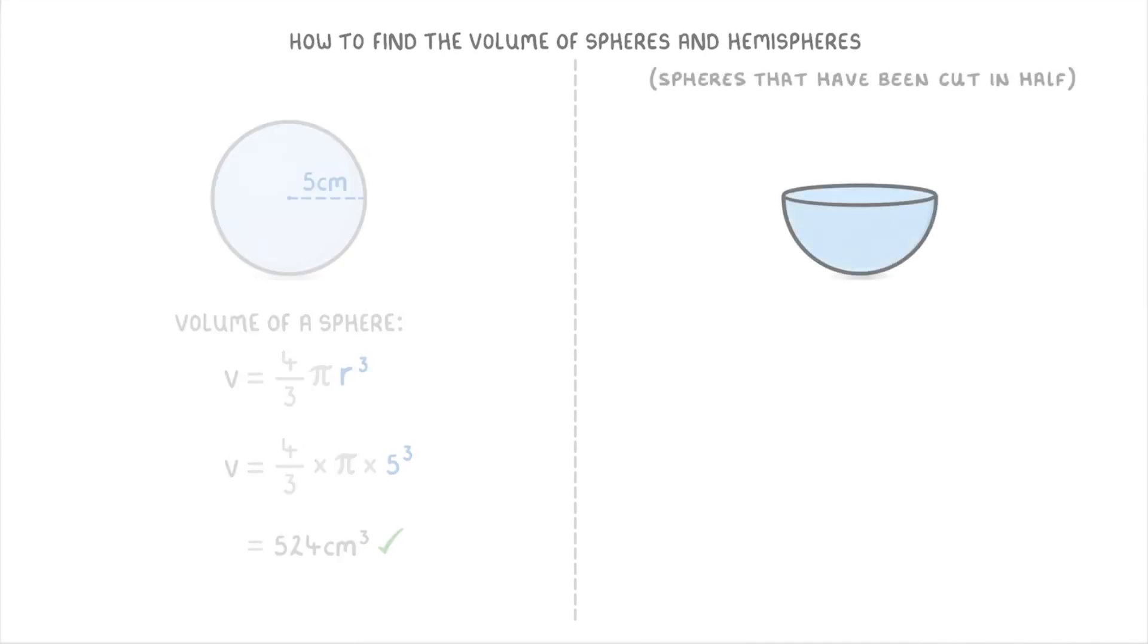Now because a hemisphere is just half a sphere, its volume would be half as well. So to calculate the volume of a hemisphere, we can just use the sphere formula that we used before, and then divide our answer by 2.